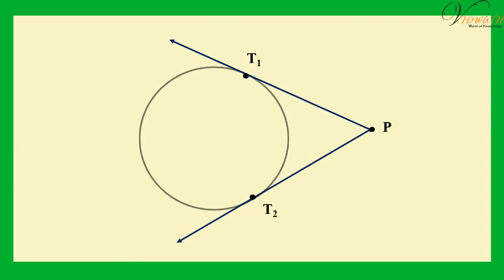Finally, take a point P outside the circle and try to draw tangents to the circle from this point. What do you observe? You will find that you can draw exactly two tangents to the circle through this point.